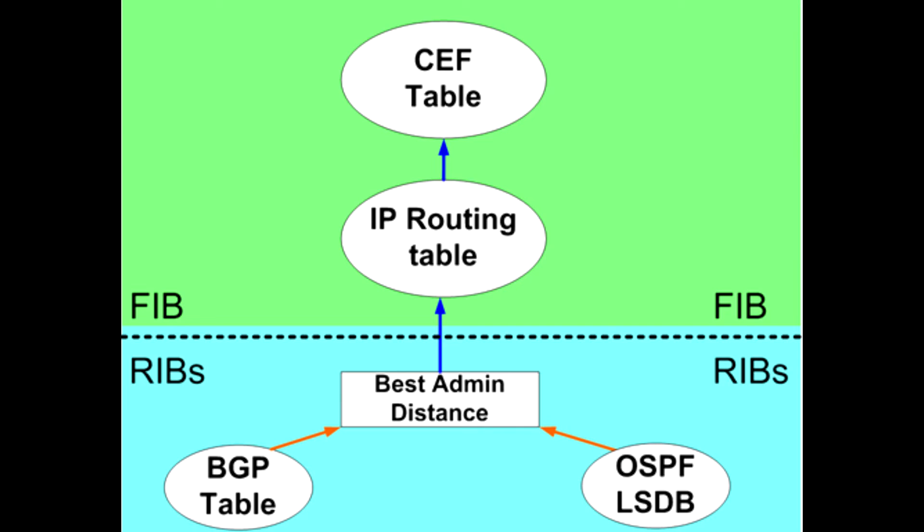In the realm of networking, the Routing Information Base, RIB, and the Forwarding Information Base, FIB, are crucial components in the router's operation.